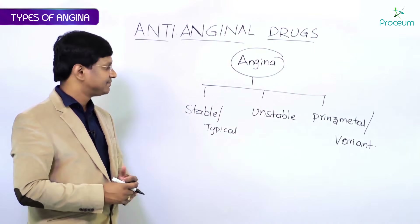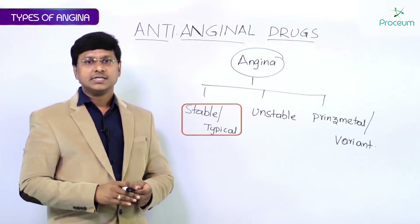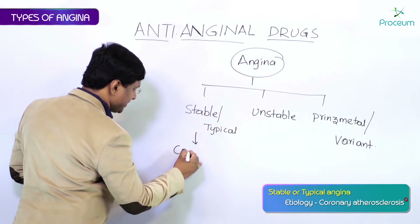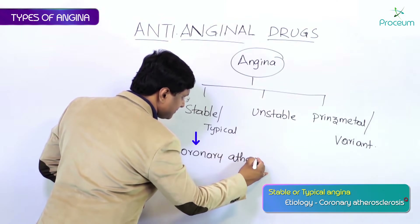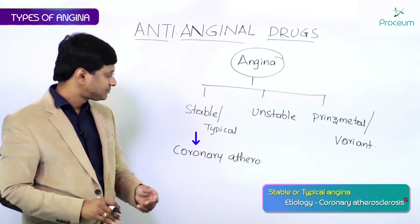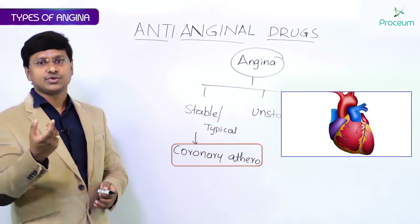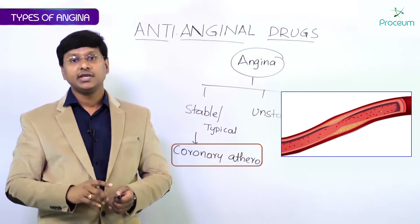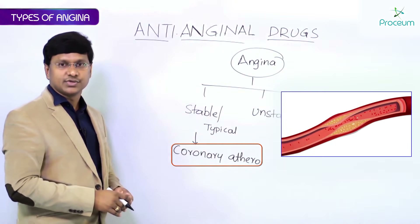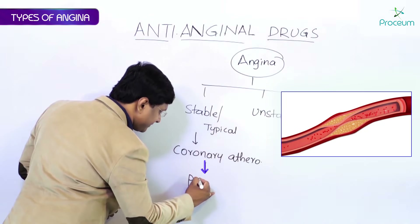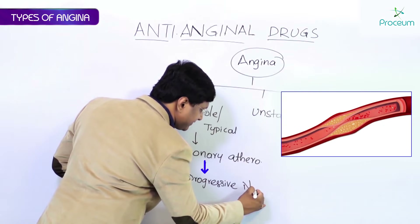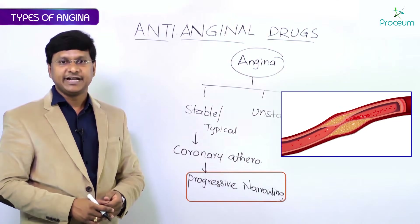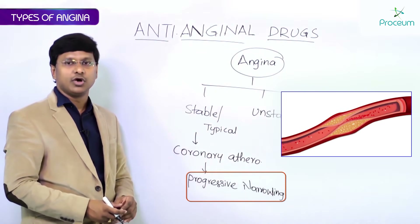Angina is one of the coronary artery diseases. Let me first discuss stable angina. Stable angina is caused by coronary atherosclerosis, which means within the coronary artery there is accumulation of fat. Because of this coronary atherosclerosis, there is progressive narrowing of the blood vessel wall.